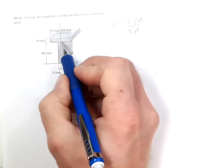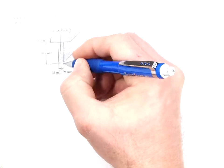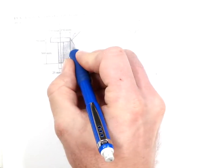So look at this, we're going to split this into two cross sections, two areas, this rectangle and this rectangle.